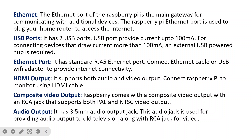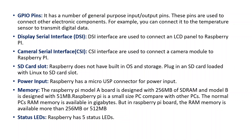USB ports: there are 2 USB ports that can provide current up to 100 milliamps. The Ethernet port is a standard RJ45 Ethernet port. HDMI output supports both audio and video outputs — Raspberry Pi can be connected with an HDMI cable for monitoring. A composite video output facility and an audio output jack are also present. GPIO pins are used to connect other electronic components, such as a temperature sensor, from which data will be transmitted. DSI — digital serial interface — is used to connect an LED panel, and the camera serial interface is used to connect a camera.